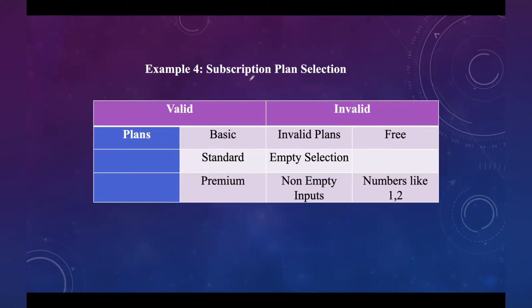For subscription plan selection, valid plans are Basic, Standard, and Premium. Invalid inputs include a non-existent plan like 'Free', an empty selection where no plan is chosen, and non-string inputs such as integers like 1 or 2 — the field expects a string value, not a number.